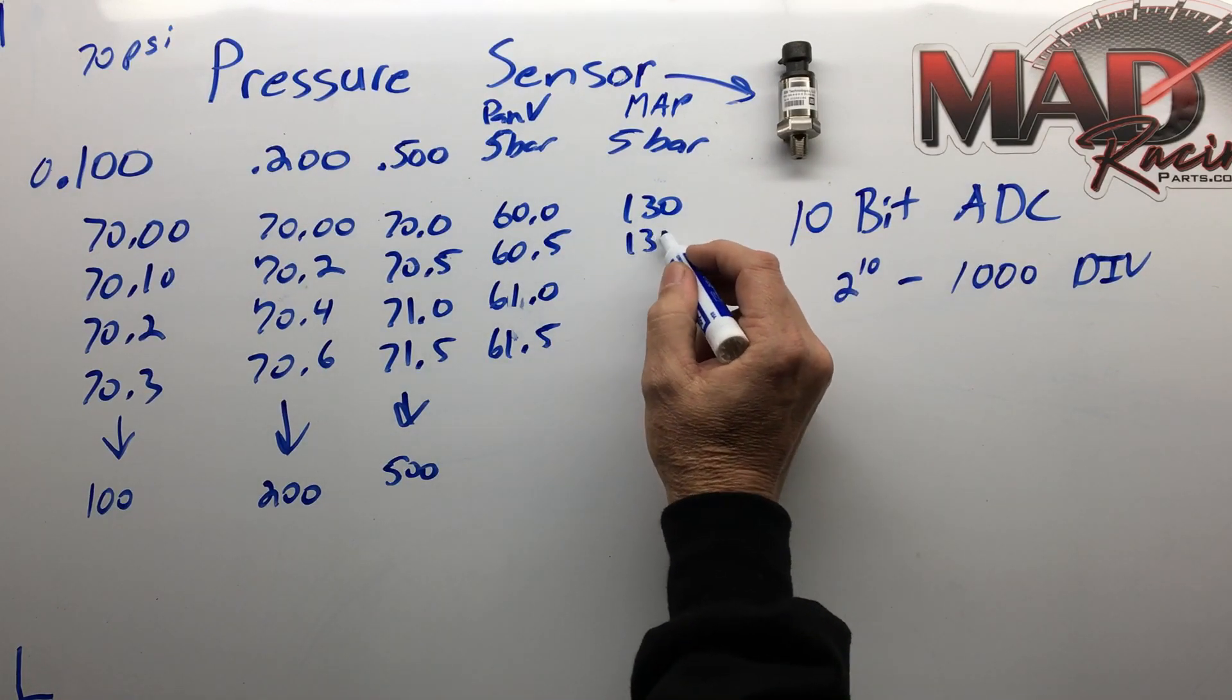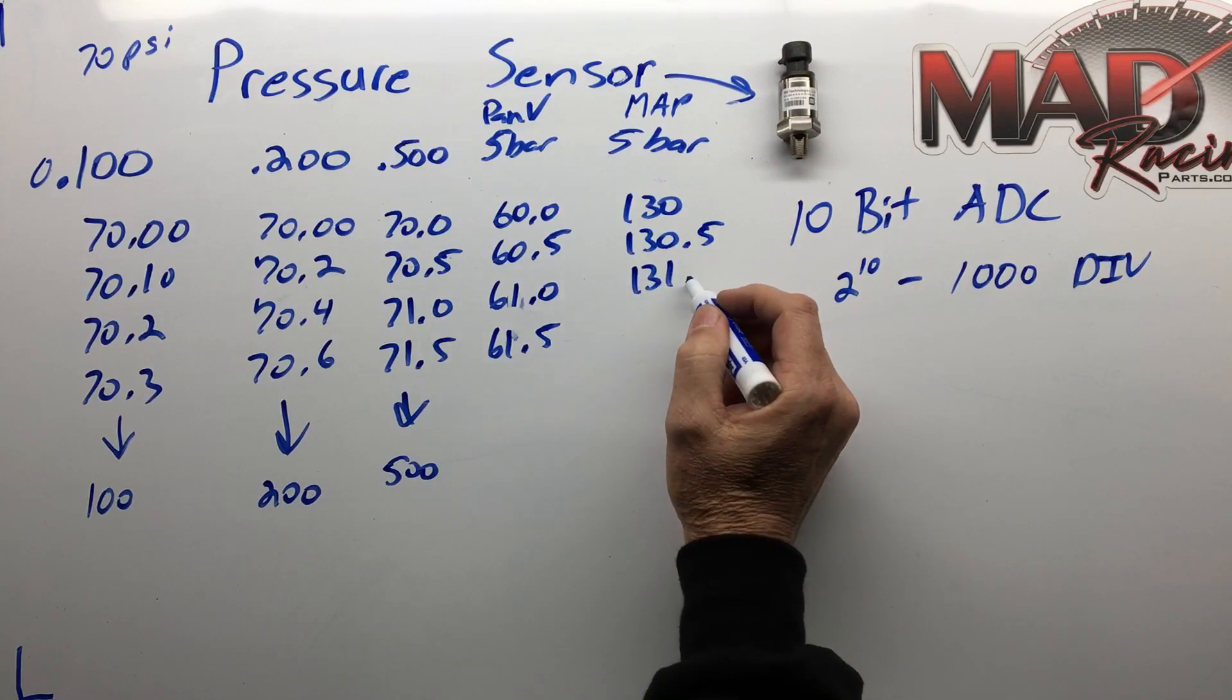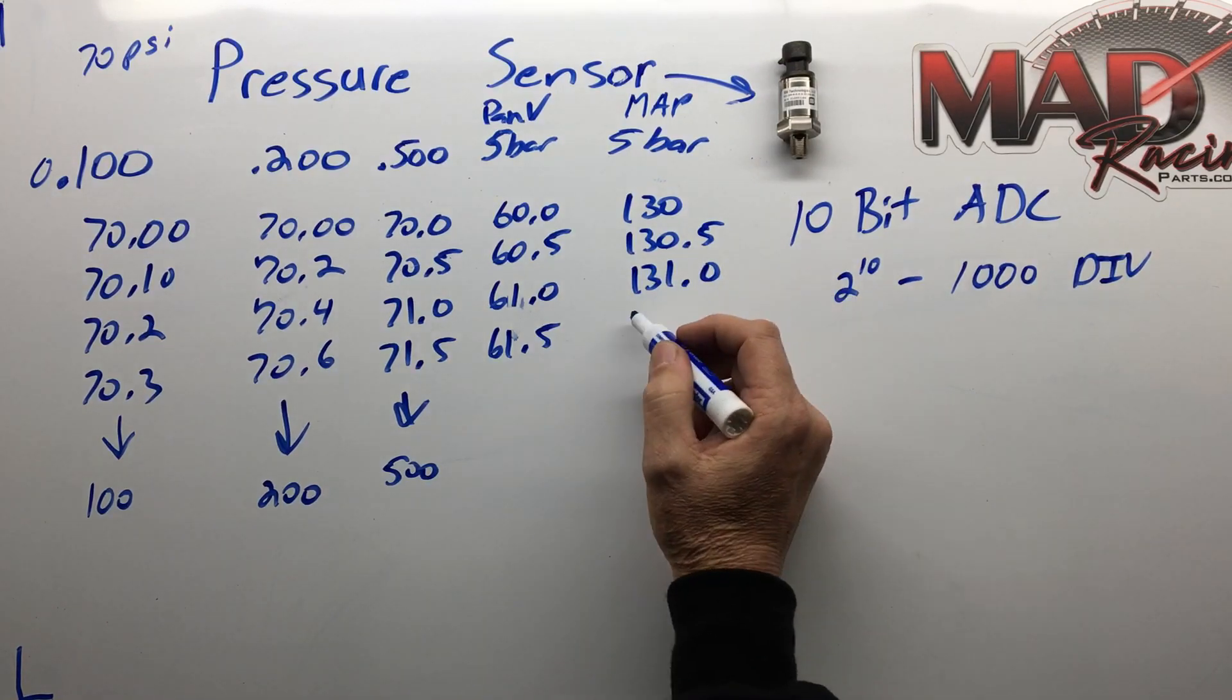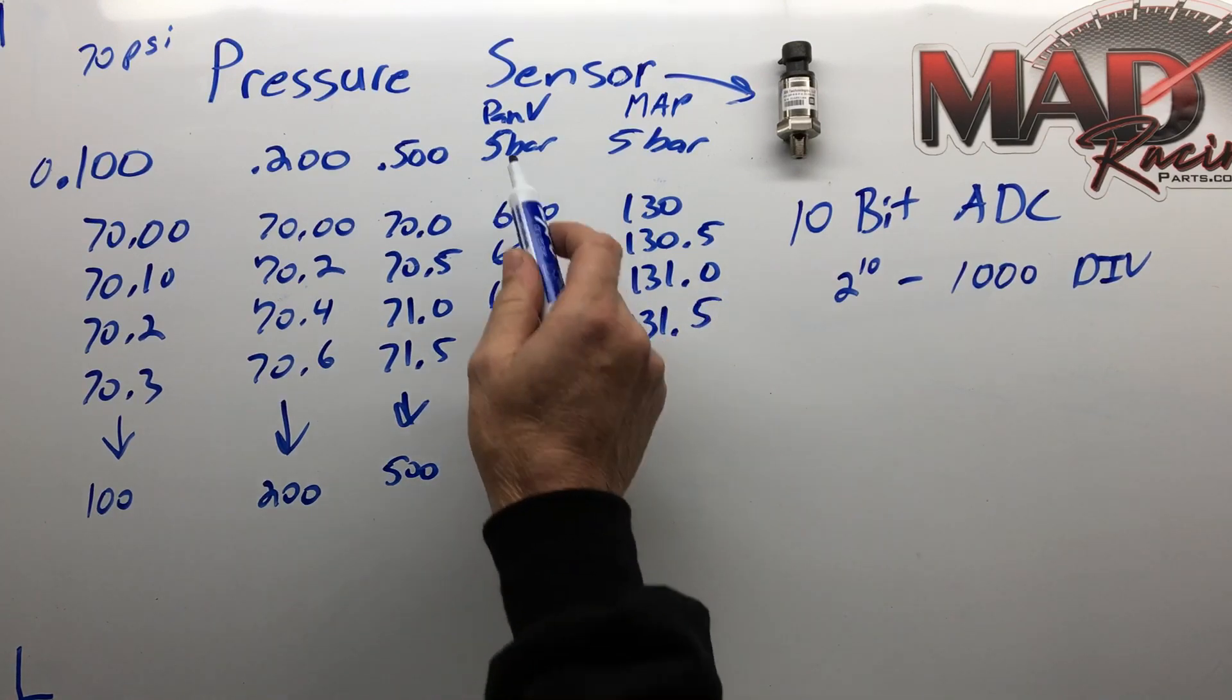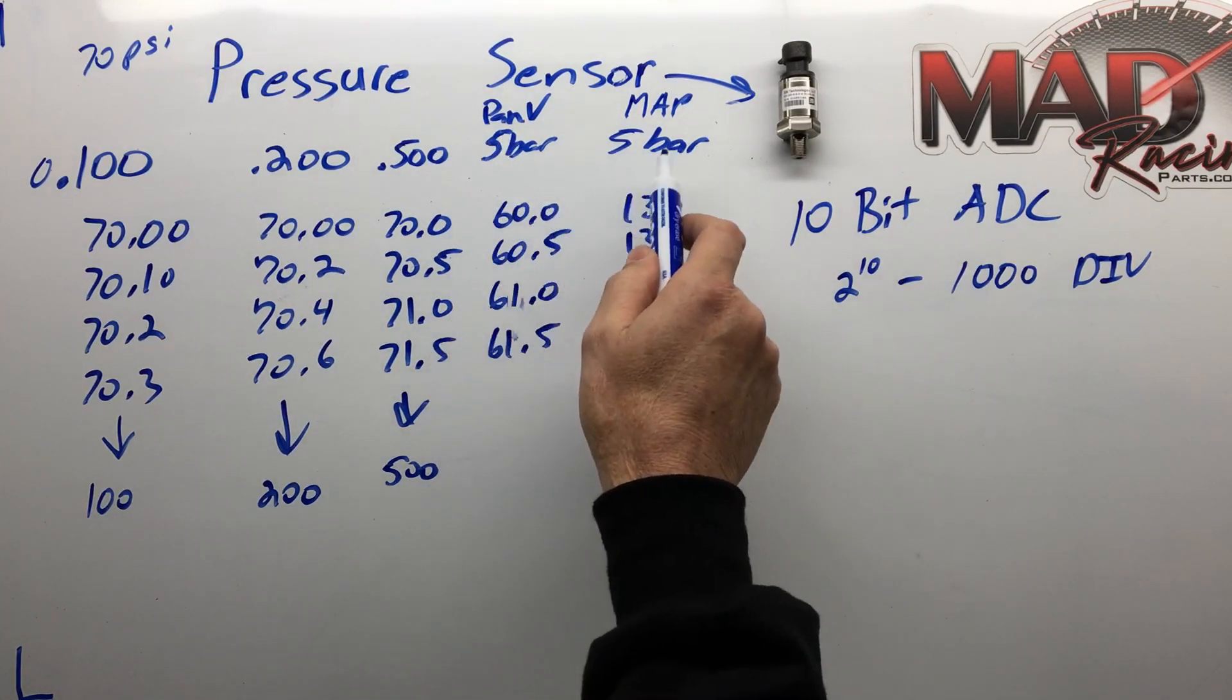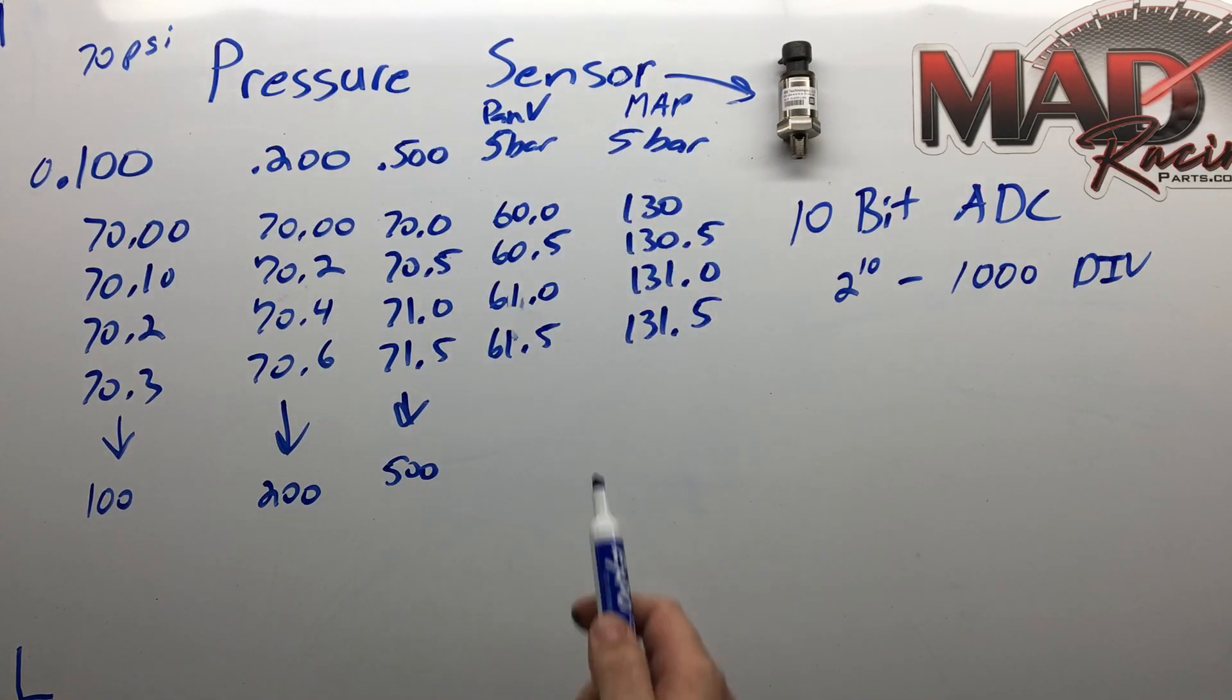I just don't see the point in trying to pin down the MAP sensor to the exact boost you're probably running. A five bar covers most everything.